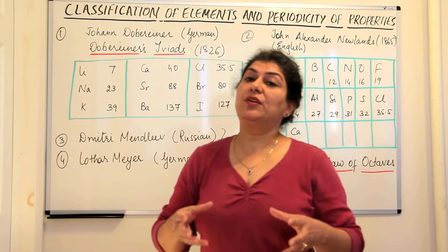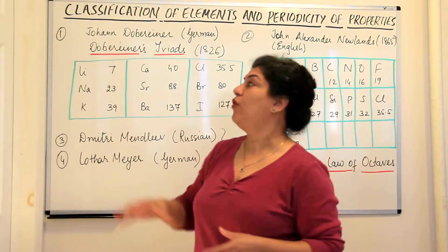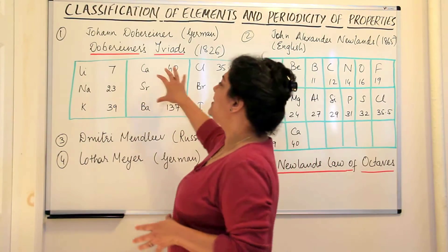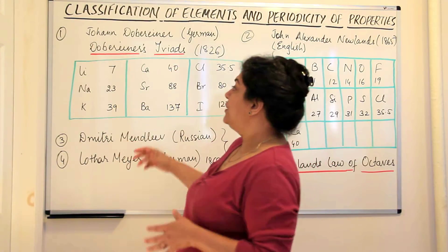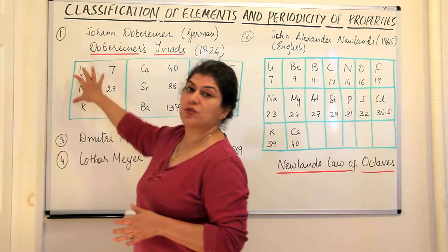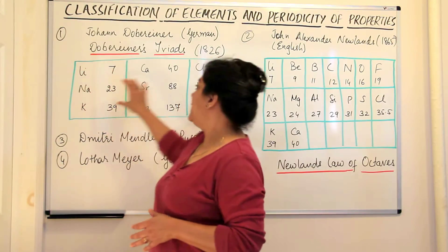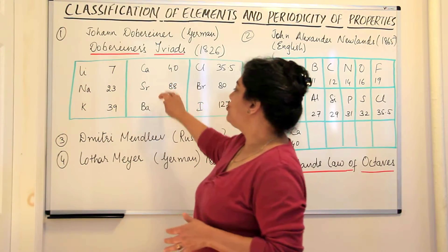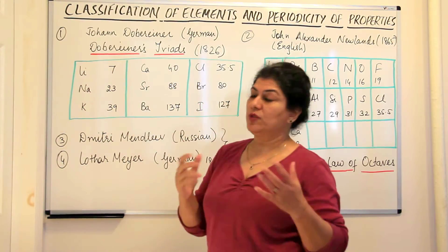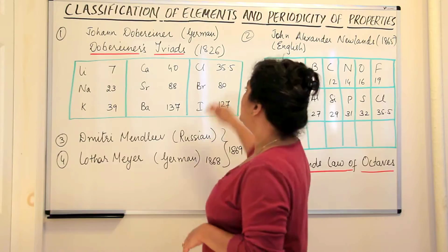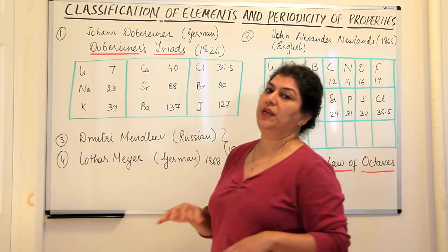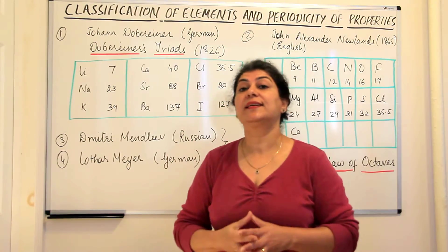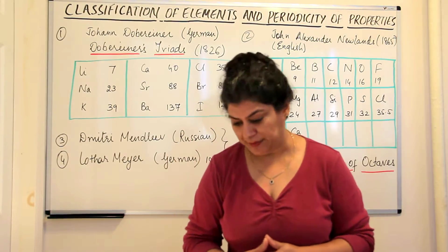Dobereiner was able to form only three such triads. These were: lithium, sodium, potassium was one of the triads; calcium, strontium, barium was another triad; and chlorine, bromine, and iodine was his third triad.